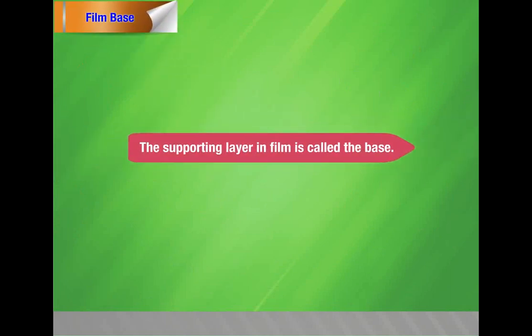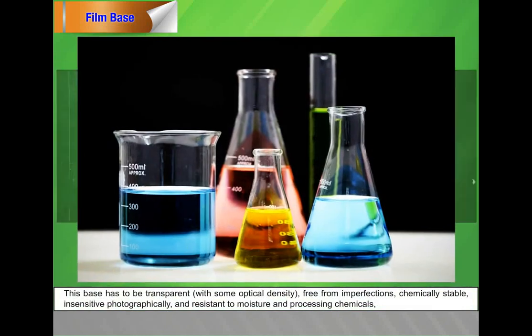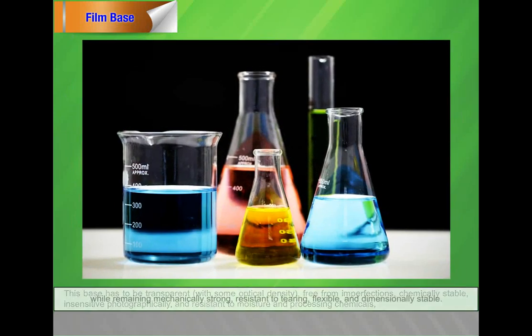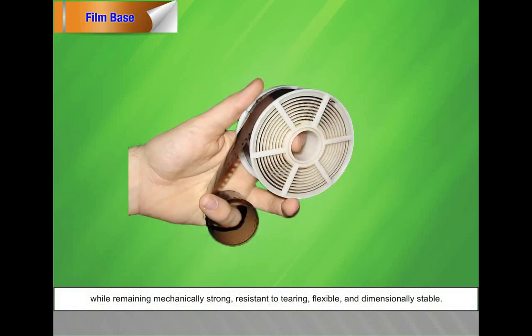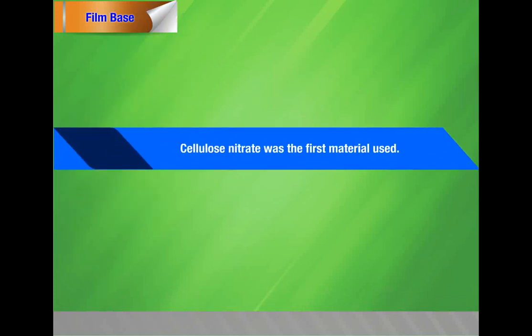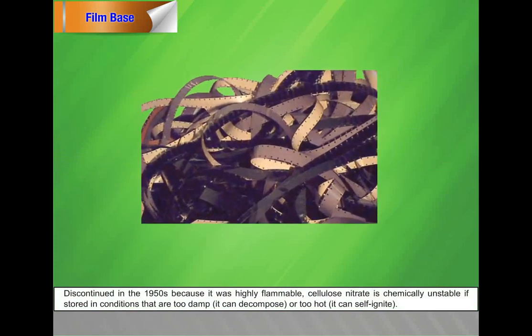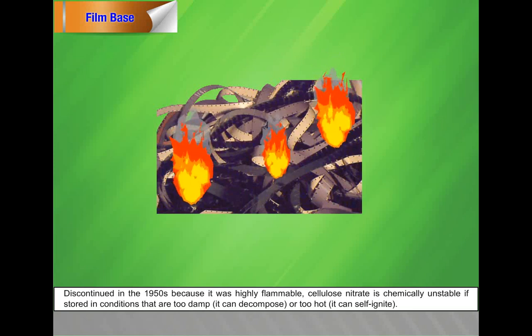Film base: the supporting layer in film is called the base. This base has to be transparent with some optical density, free from imperfections, chemically stable, insensitive photographically, and resistant to moisture and processing chemicals, while remaining mechanically strong, resistant to tearing, flexible, and dimensionally stable. Three plastics have been widely used as a motion picture film base. Cellulose nitrate was the first material used, discontinued in the 1950s because it was highly flammable. Cellulose nitrate is chemically unstable — if stored in conditions that are too damp it can decompose, or too hot, it can self-ignite.